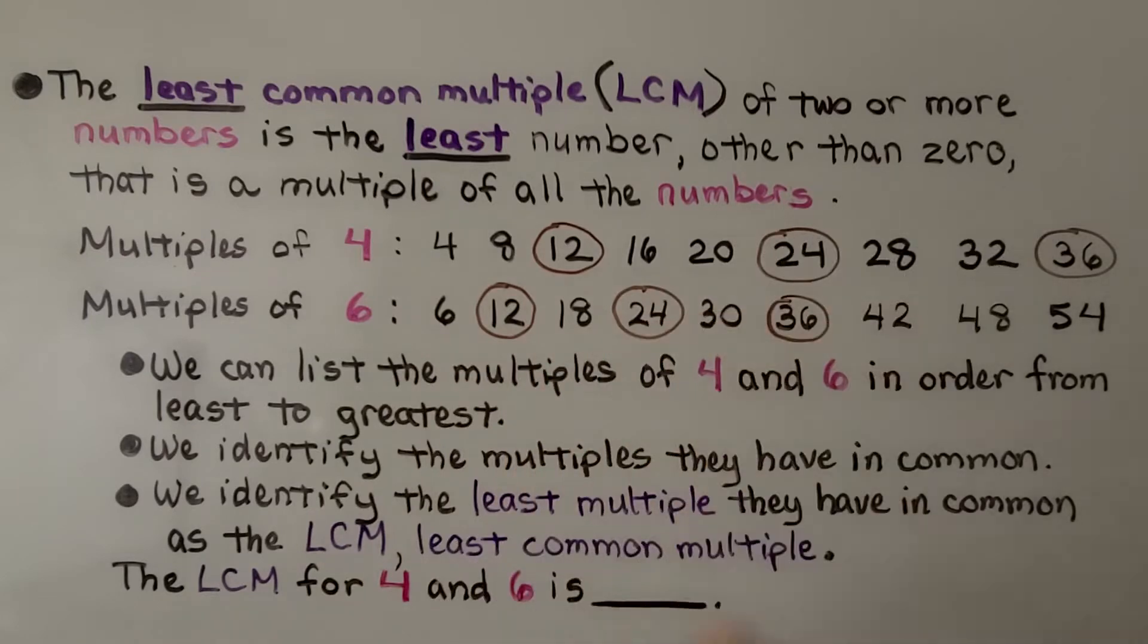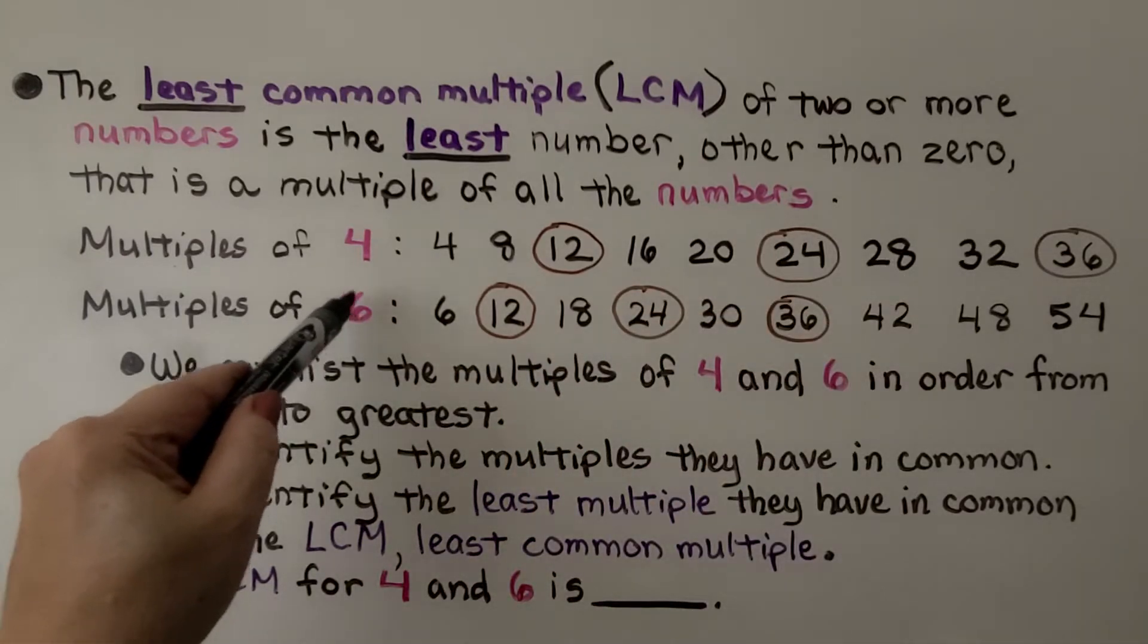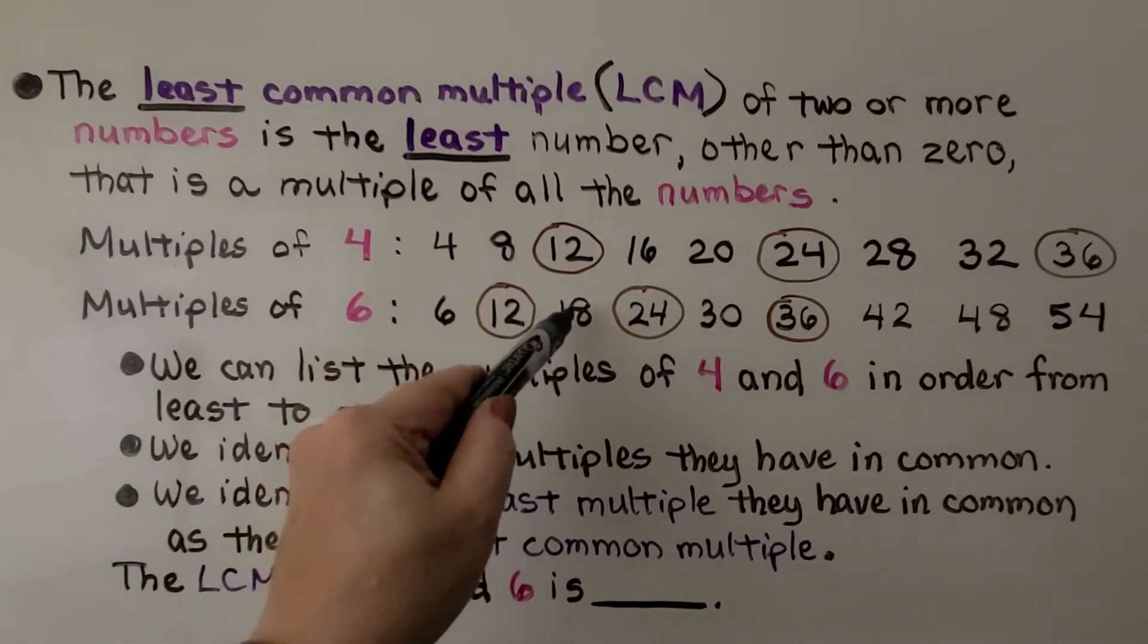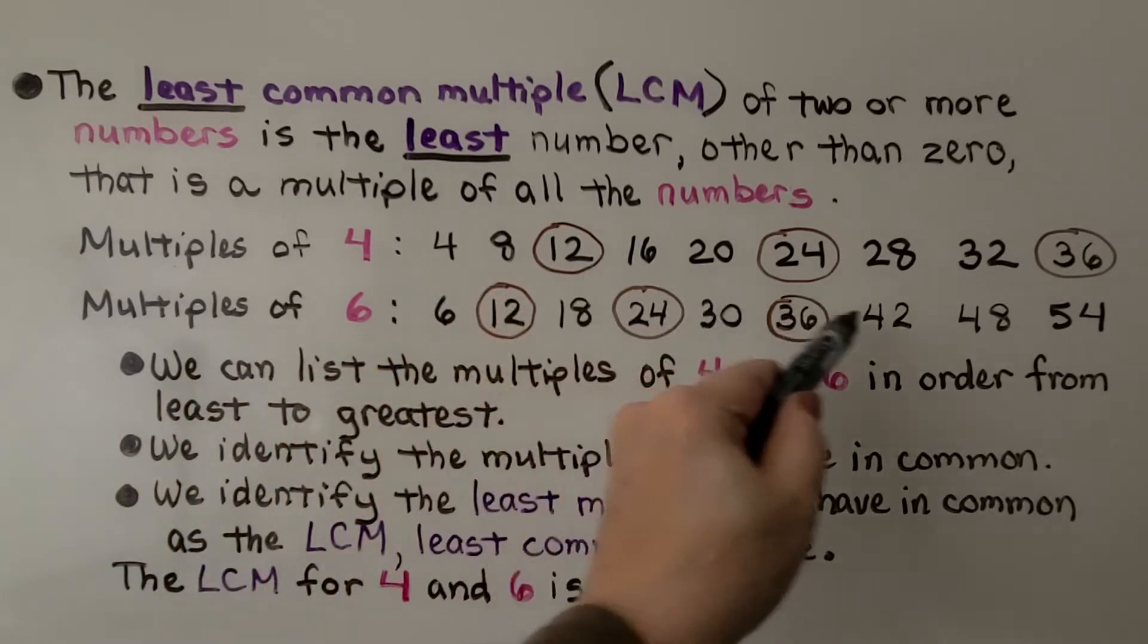For the multiples of 6, we think 6 times 1 is 6, 6 times 2 is 12, 6 times 3 is 18, 6 times 4 is 24, and we keep going.